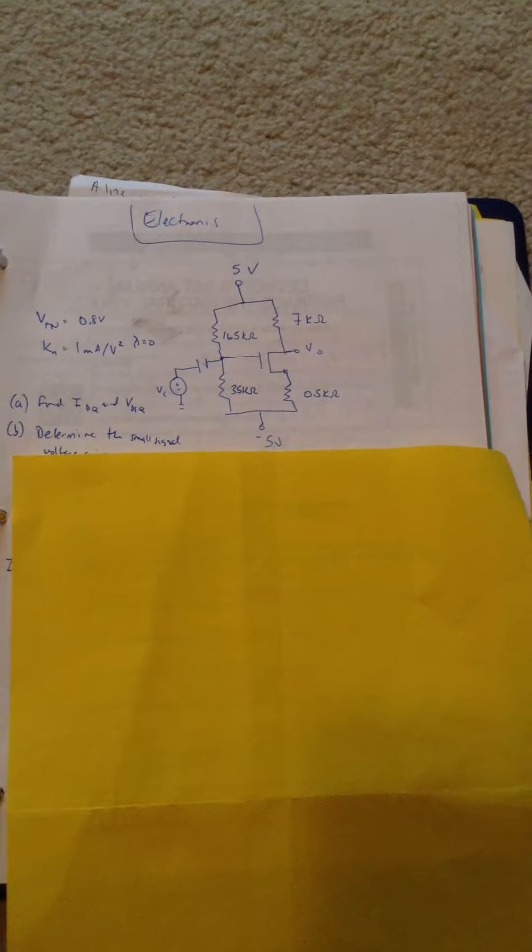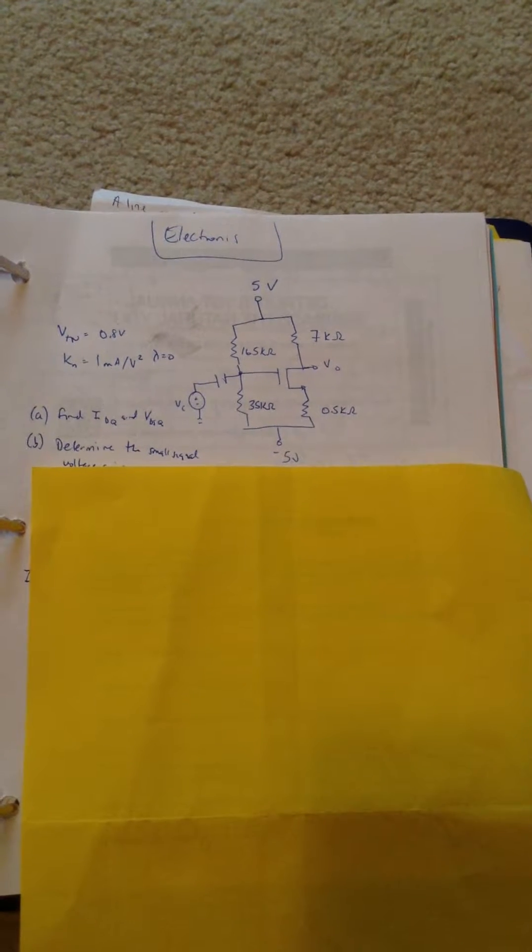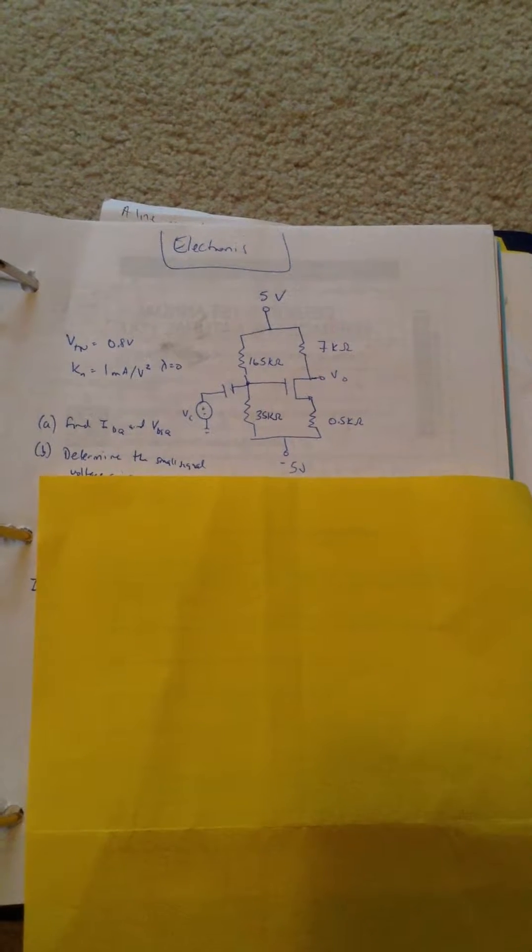Here's another example from the FE. This is from electronics. It's an N-channel enhanced MOSFET. And the problem is giving the threshold voltage, which is 0.8 volts, and KN, which is 1.